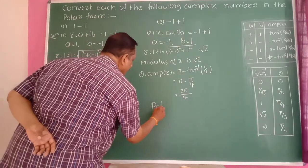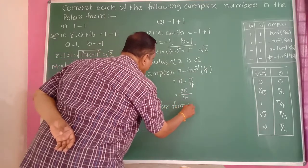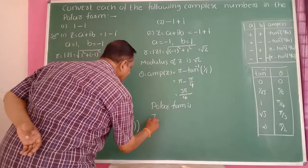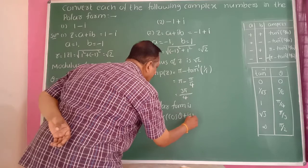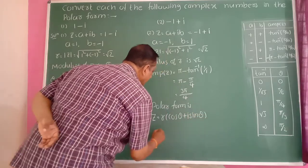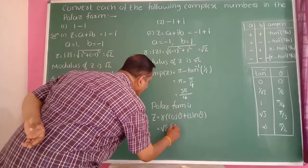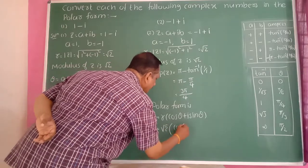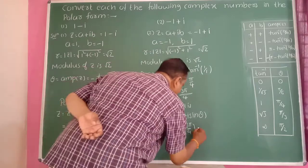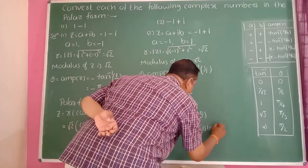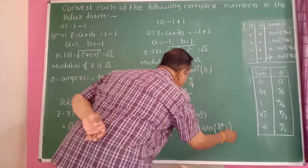Then the polar form: z equals r·(cos θ + i·sin θ), which gives z equals √2·(cos(3π/4) + i·sin(3π/4)). This is the polar form of the complex number z equals minus 1 plus i.